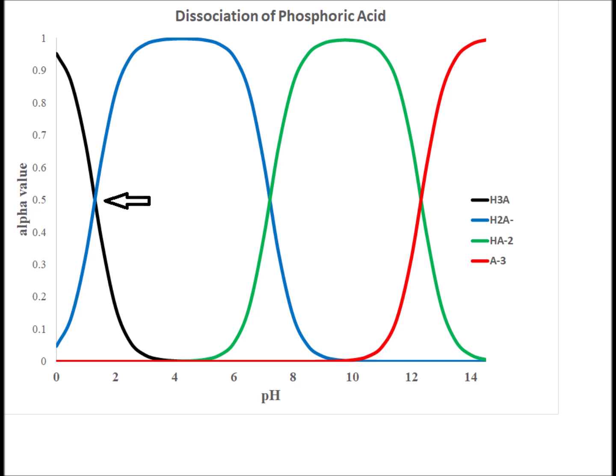Here we notice, next to the arrow, where the concentration of phosphoric acid and the concentration of dihydrogen phosphate ion are equal. This is the crossover point between the black and the blue lines, and it corresponds exactly to the pKa1 for the first acid dissociation constant, around 2.16.